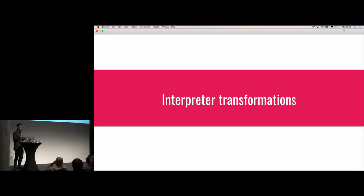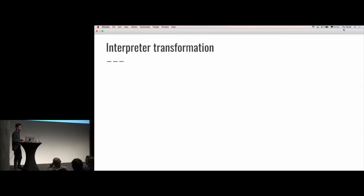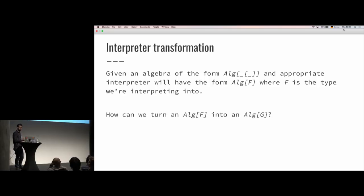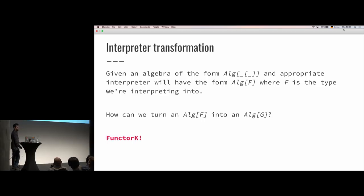Now let's look at interpreter transformations — we'll see in a minute why this is useful. If we have an algebra of this form that takes a type constructor, and an appropriate interpreter of type Algebra of F where F is the type we're interpreting into, how could we turn an interpreter of F into an interpreter of G? If we have a way to turn any value of F of A into any value of G of A, then this should be fairly simple — and this is actually fairly simple with something called FunctorK. FunctorK — where K stands for higher-kinded — is analogous to a functor, just with higher-kinded types. Instead of mapping over a type constructor F, we map over an algebra that takes a type constructor, and instead of a function, we take this higher-kinded function called a natural transformation, or FunctionK.